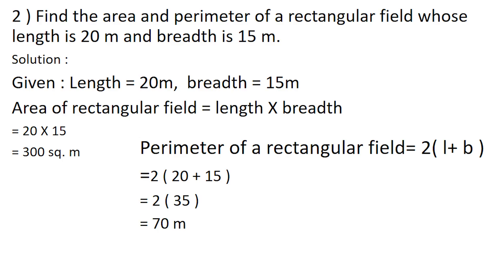Next problem: find the area and perimeter of a rectangular field whose length is 20 meters and breadth is 15 meters. Area of the rectangular field is length into breadth, which is 20 into 15, giving us 300 square meters. Perimeter of the rectangular field is 2 into (20 + 15), which is 2 into 35, equal to 70 meters.